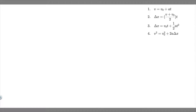In this problem, a model rocket is launched straight upward with an initial speed of 50 meters per second. It accelerates with a constant upward acceleration of 2 meters per second squared until its engine stops at an altitude of 150 meters. Part A: what can you say about the motion of the rocket after its engine stops? Part B: what is the maximum height reached by the rocket? Part C: how long after liftoff does the rocket reach its maximum height? And Part D: how long is the rocket in the air?